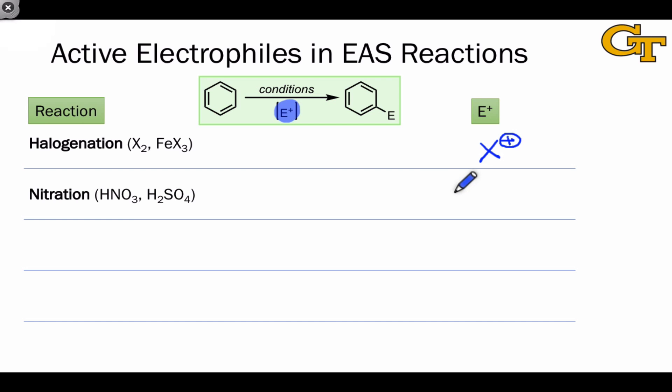Nitration is an electrophilic aromatic substitution reaction that installs the nitro group, and the electrophilic species here is the highly reactive NO2 plus cation. This is isoelectronic with carbon dioxide with the very important difference that the central atom is now positively charged rather than neutral.